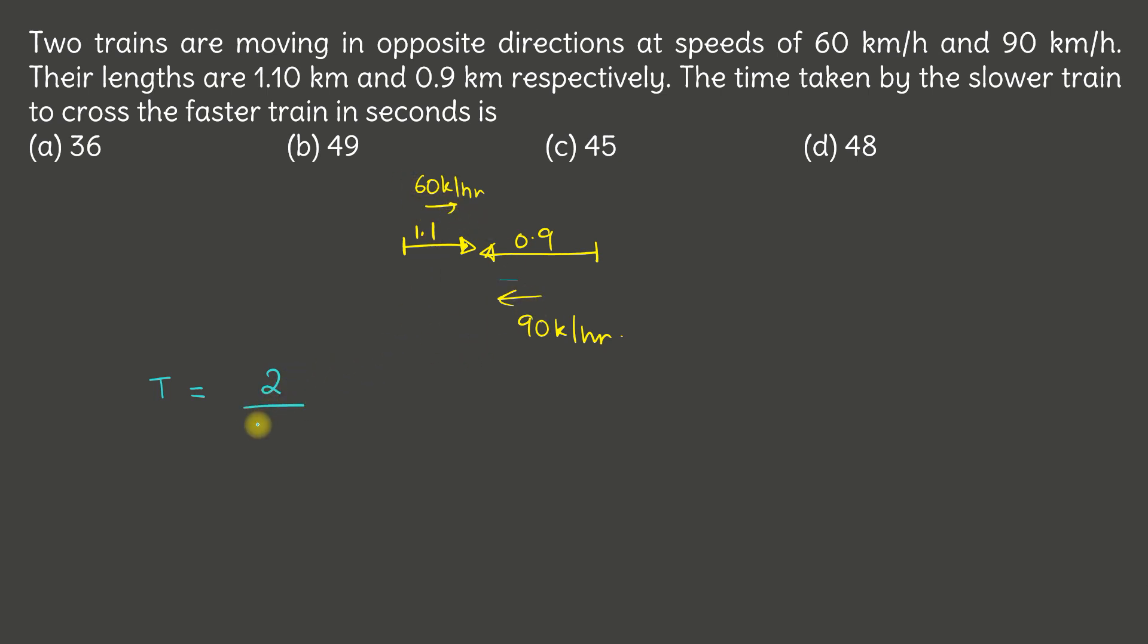That will be 60 plus 90, 150. This time will come in hours. We need to give the answer in seconds. To convert hours to seconds, first multiply by 60 to convert to minutes, and multiply by 60 again to convert minutes to seconds.